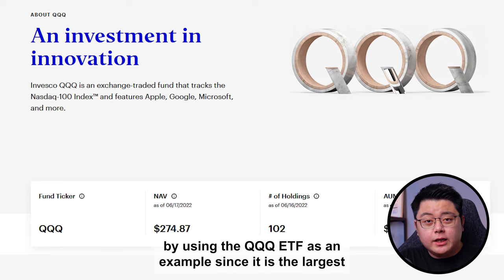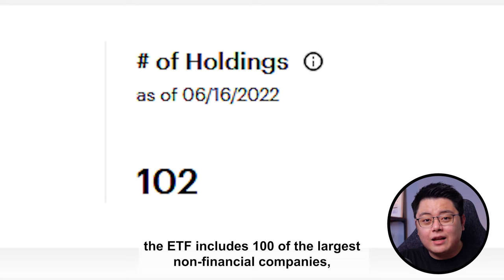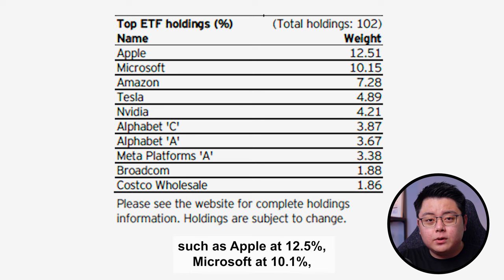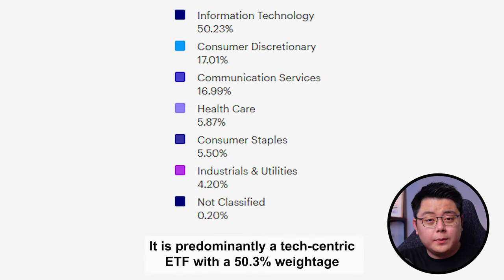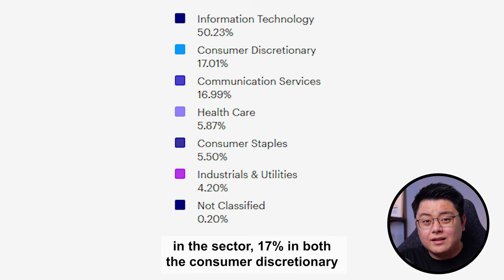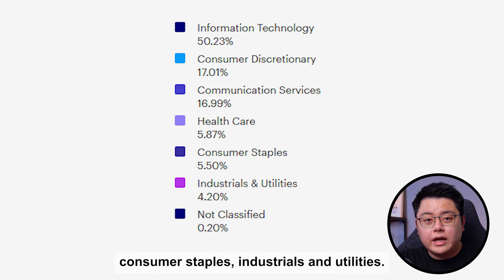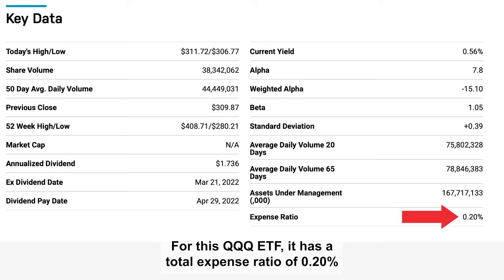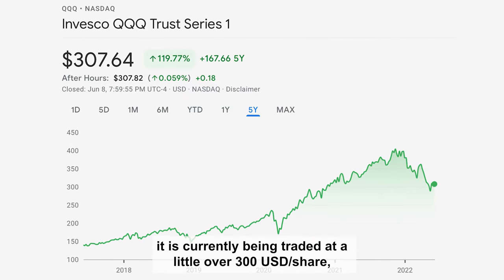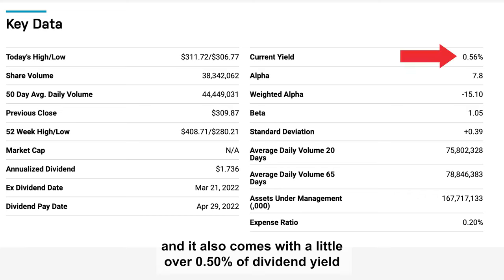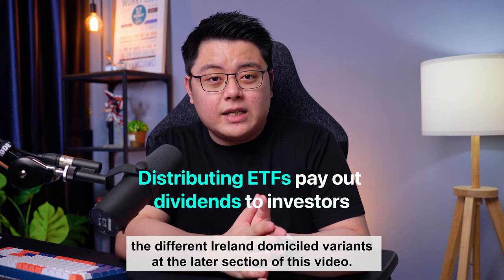We'll start with the specifications of the index using the QQQ ETF as an example, since it is the largest US ETF tracking it. The ETF includes 100 of the largest non-financial companies, with its top 10 weightage dominated by tech stocks such as Apple at 12.5%, Microsoft at 10.1%, followed by Amazon, Tesla, Nvidia, Google, Facebook, and more. It is predominantly a tech-centric ETF with 50.3% weightage in that sector, 17% in both consumer discretionary and communication services, and the remainder in healthcare, consumer staples, industrials, and utilities. It has a total expense ratio of 0.2% with more than $160 billion USD of assets under management. As of recording, it trades at a little over $300 per share, with just over 0.5% dividend yield as a distributing ETF.